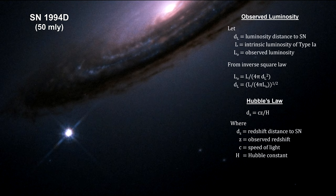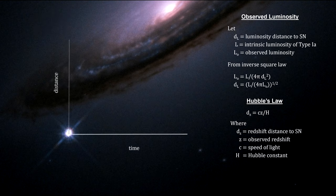Here's how it works. First, we measure the luminosity of a distant Type Ia supernova like SN1994D and measure its redshift. Then we map the distance between us and the supernova over time.